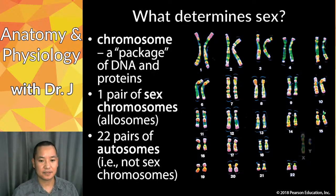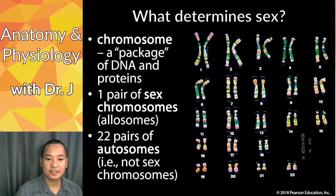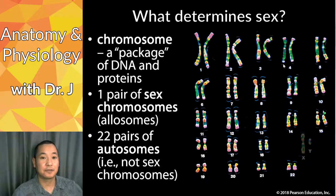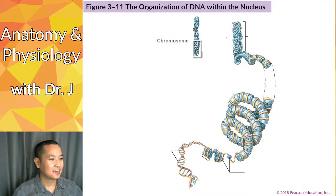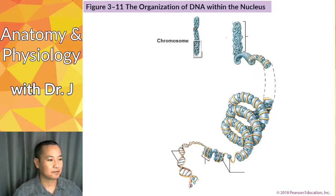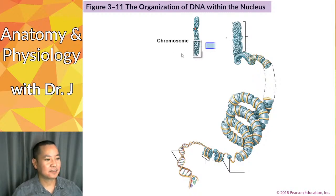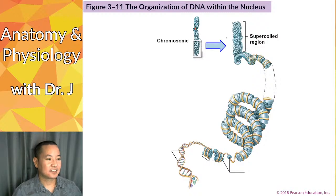You have a pair of sex chromosomes, sometimes called allosomes, that determine biological sex, and 22 pairs of autosomes — basically everything that's not a sex chromosome. We'll cover intersex conditions if we have time, but we're just talking about the basics, since sometimes there are variations on the typical male or female morphology.